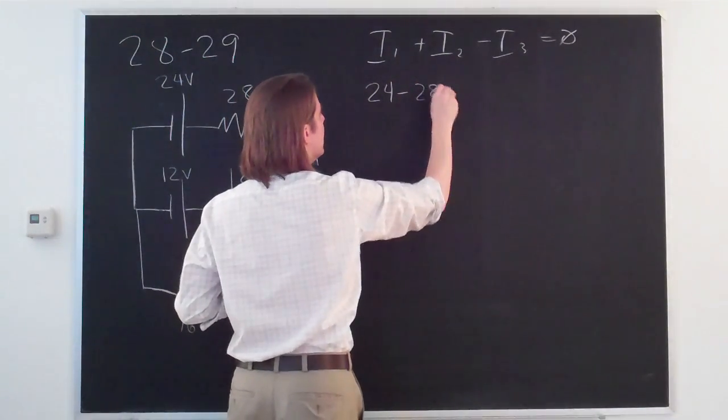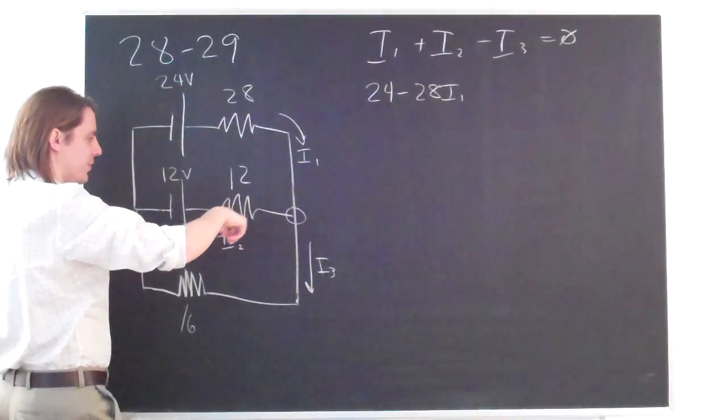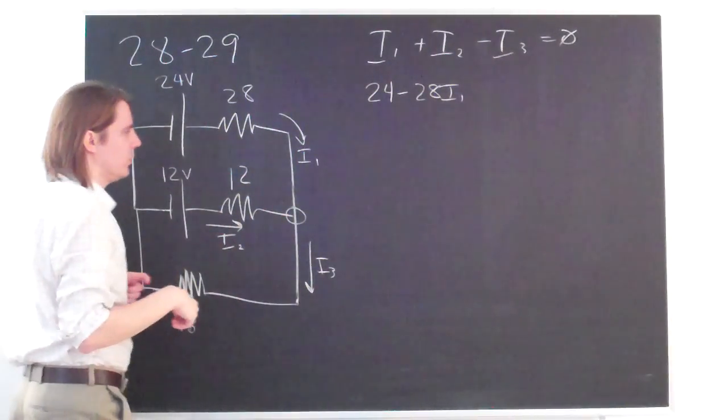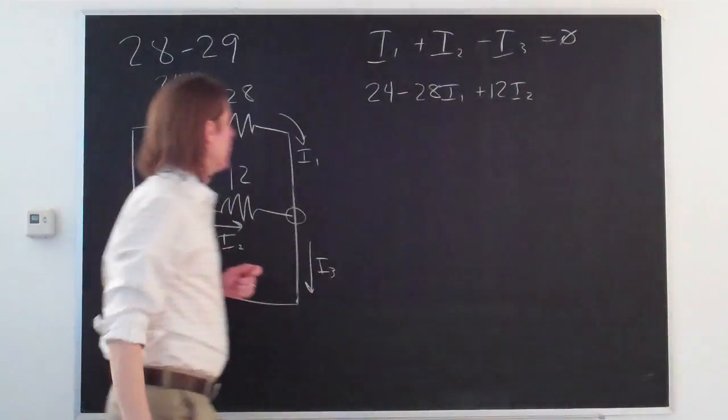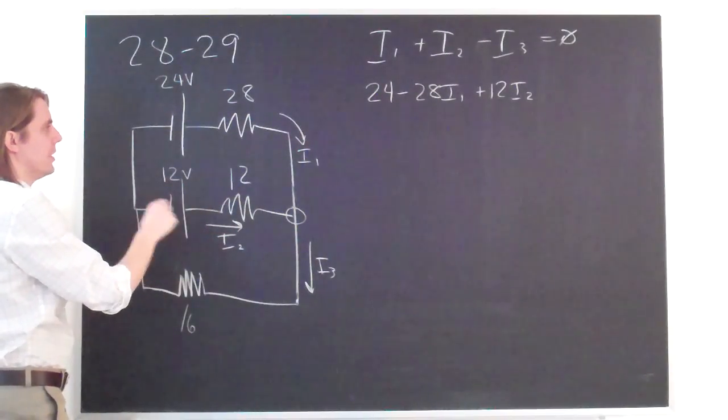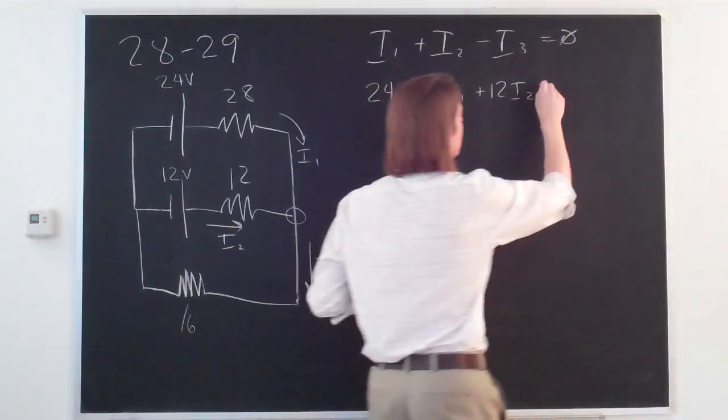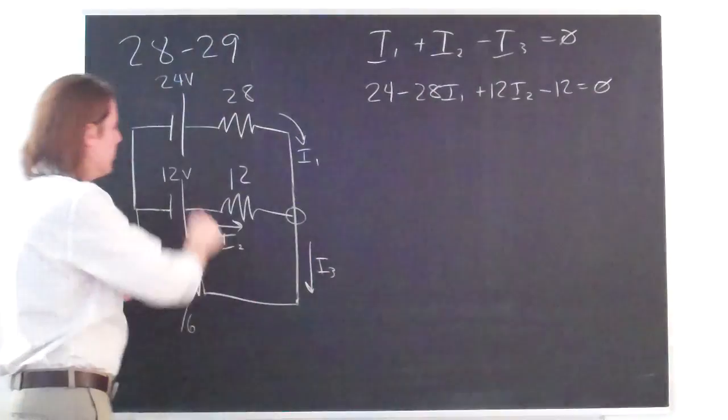And then we go against I2 on a 12 ohm resistor. So that's plus 12I2. And then we go against the battery. So then that's minus 12.